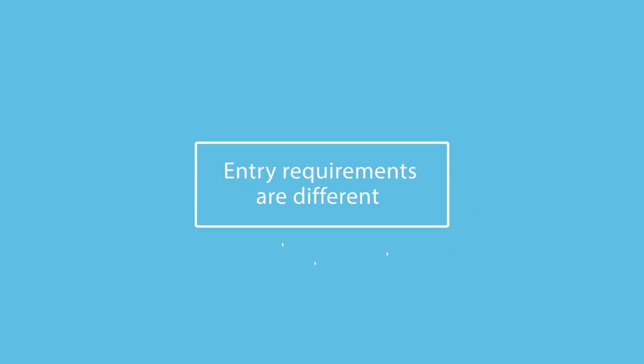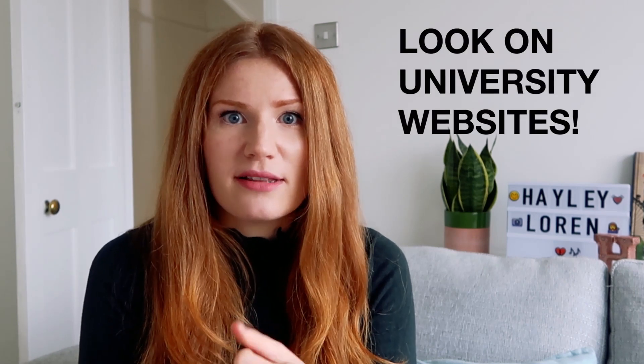The first thing I want you to know is that each university is very different in terms of their entry requirements. It might be that one university says they want you to do maths and physics, but another one only wants maths and is quite flexible on the other two. So the big bit of advice here is get on the websites of universities. If you have an idea of which universities you're thinking about, go online, go on their website, go on the engineering college page and look at the entry requirements. I'm just going to show you a couple of examples of how they differ.